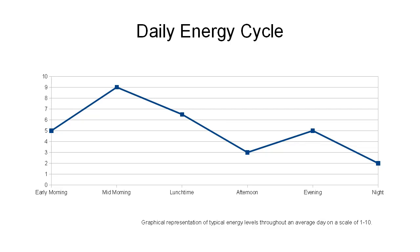As you can see, if you follow the chart from left to right, in early morning you wake up with your energy levels at about the middle of the range. They peak in mid-morning as you wake up, then start to taper off as you get towards lunchtime, dropping considerably to the lowest point in the middle of the afternoon. Then your energy levels naturally start to rise again into the evening, and then drop off at nighttime so you can go to sleep and recharge.